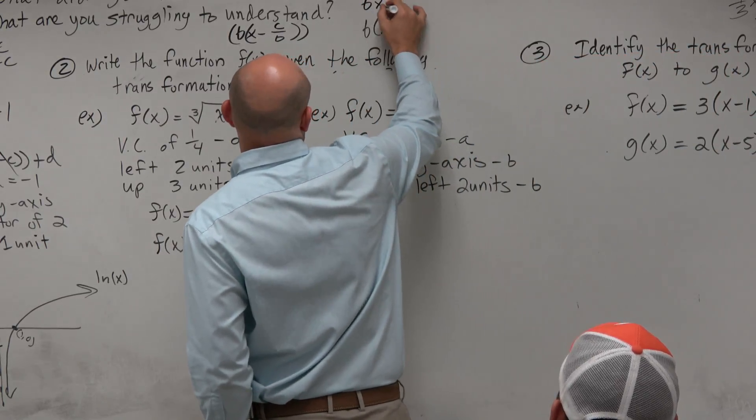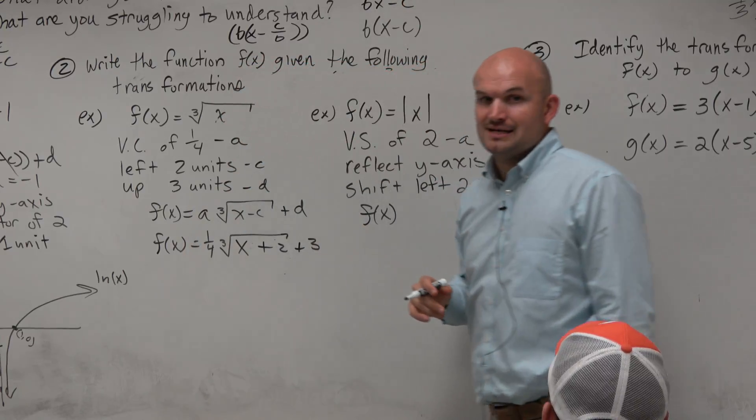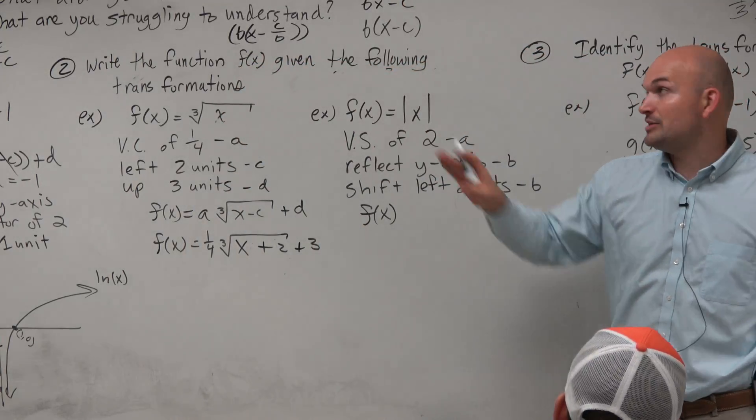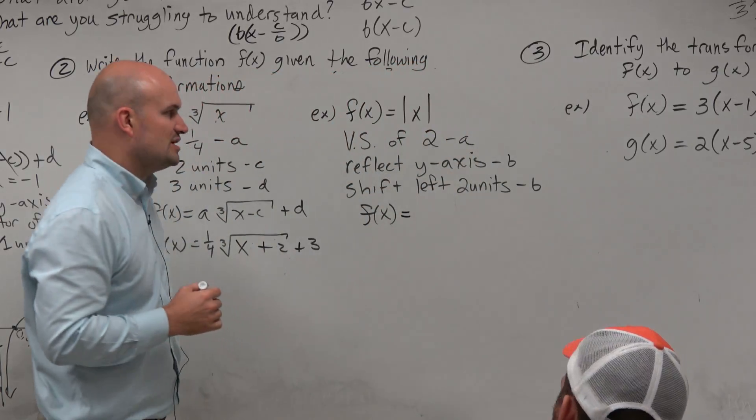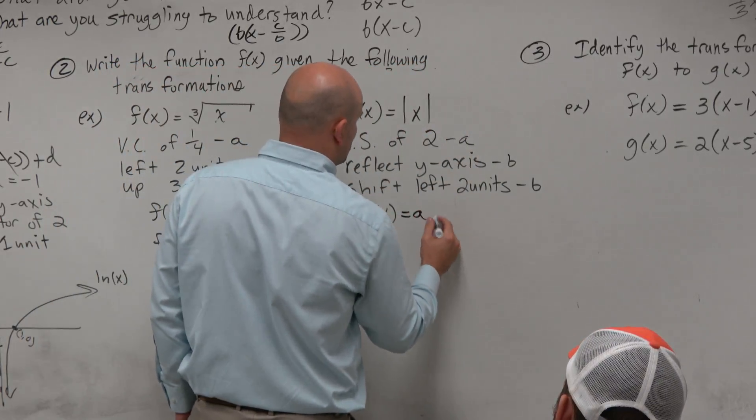Make sure you guys write this as the B factored out. Do not write it as Bx minus C. Make sure you write it in this factored form. So a vertical stretch of two, or so let's write it out first.